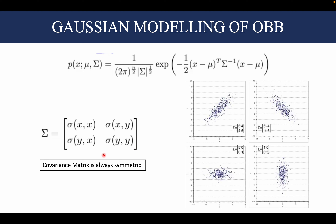The covariance matrix encodes geometric information about the two-dimensional Gaussian. In the bottom two cases the off-diagonal elements are zero, meaning covariances are zero, and therefore the two-dimensional Gaussians are axis-aligned. The variances along the various axes are given by the diagonal elements. The images on the top have covariances: a positive covariance causes a right tilt to the 2D Gaussian, whereas a negative covariance causes a left tilt.